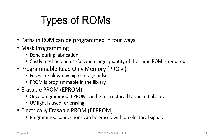EPROM is a type of memory that can be erased by exposing it to ultraviolet light for a duration of up to 40 minutes. UV light is used for erasing and an EPROM eraser achieves this function. During programming, an electrical charge is trapped in an insulated gate region and is erased when not required. EEPROM — electrically erasable programmable read-only memory — is programmed and erased electrically. It can be erased and reprogrammed about 10,000 times, but erasing and programming take about 4 to 10 milliseconds. Any location can be selectively erased and programmed, one byte at a time rather than erasing the entire chip, making the reprogramming process flexible but slow.